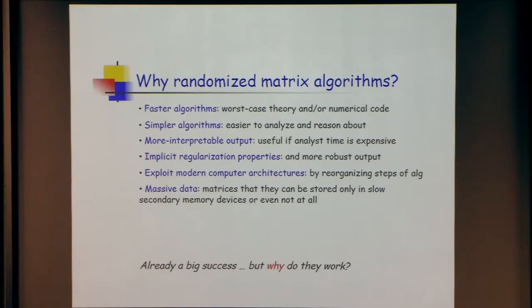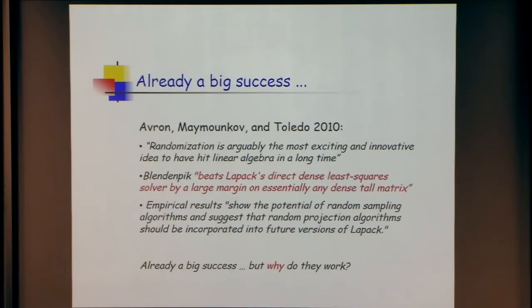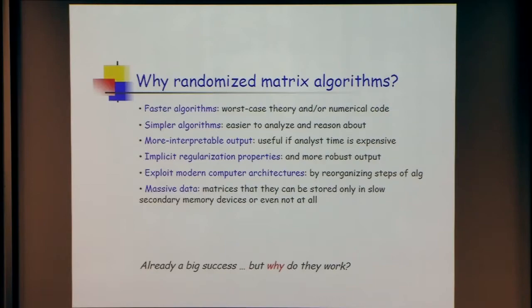The implicit regularization properties: although the randomness is inside the algorithms and you have a worst-case guarantee, in certain cases you'll get smoother and nicer answers — empirically what regularization will do. You can exploit modern computer architectures by reorganizing the steps of the algorithm, with better communication properties, which is going to be very important for going to large-scale settings.